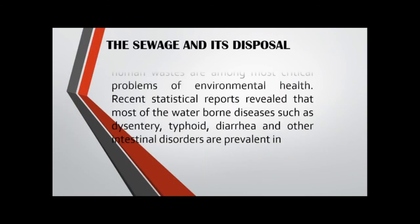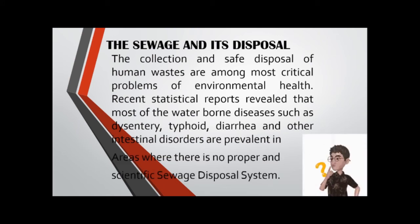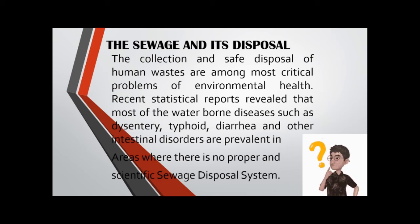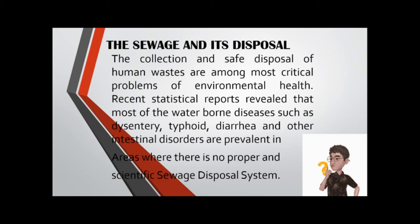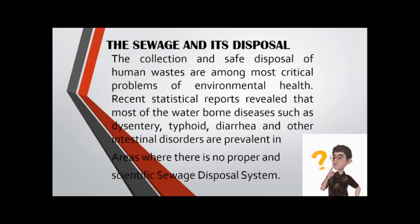The collection and safe disposal of human waste are among the most critical problems of environmental health. Statistical reports reveal that diseases such as dysentery, typhoid, diarrhea, and other intestinal disorders are prevalent in areas without a proper sewage disposal system. When human wastes are deposited in a pit, typhoid and dysentery-causing organisms do not travel horizontally in the soil by themselves — they are carried through water flows, flies, rodents, cockroaches, and other vermin causing contamination. It is important not only to know the different types of sewage disposal but also to understand the scientific value of the system.